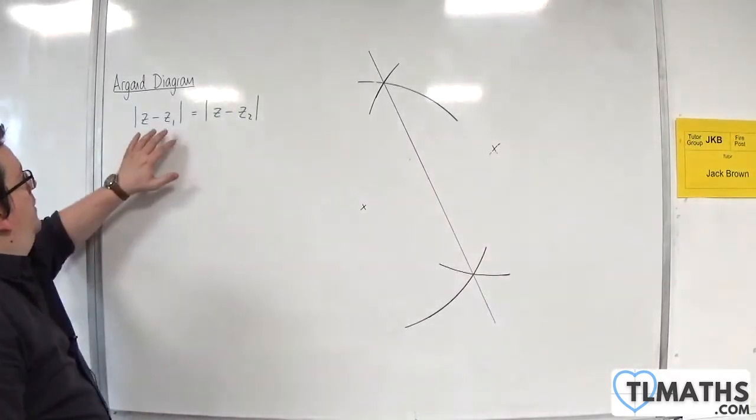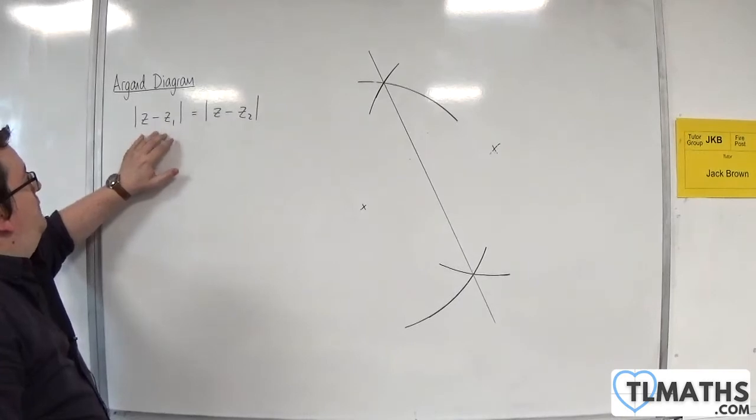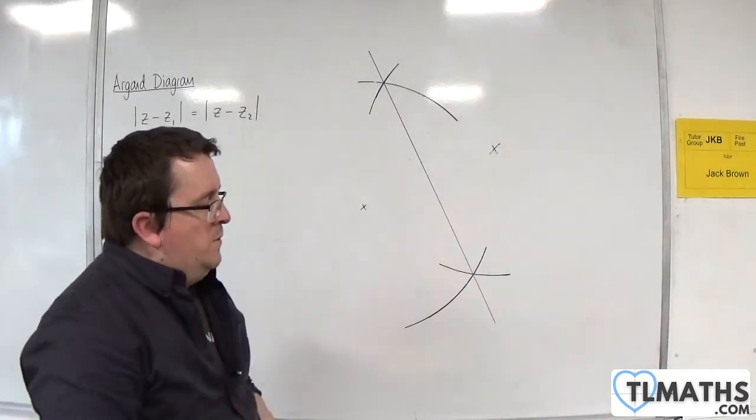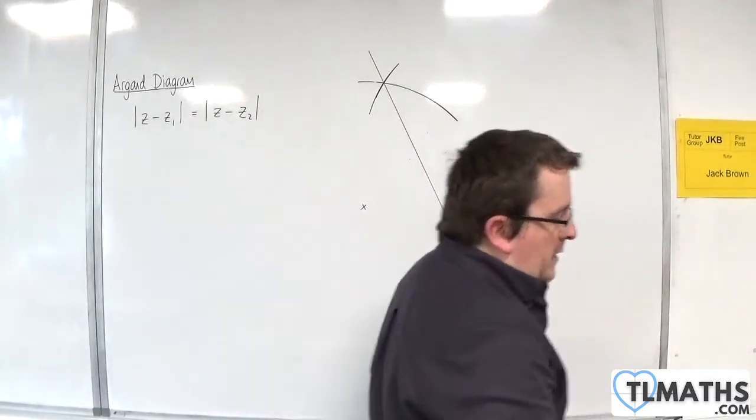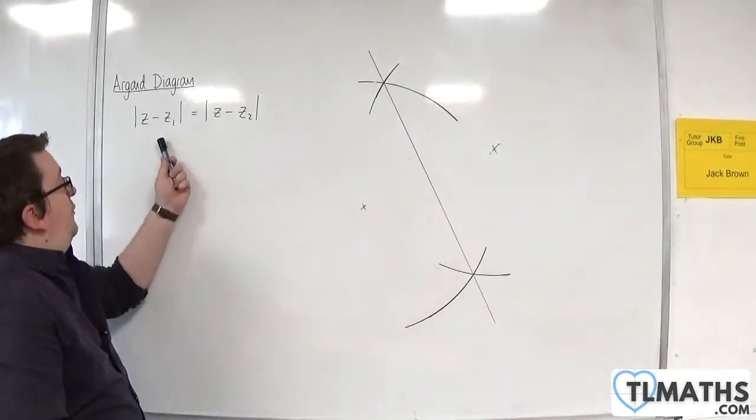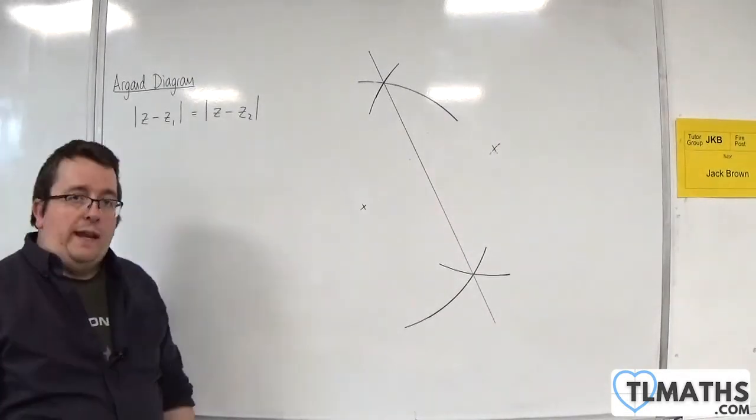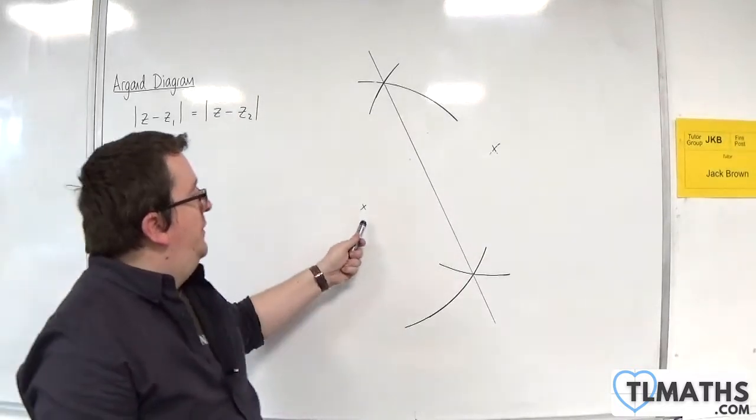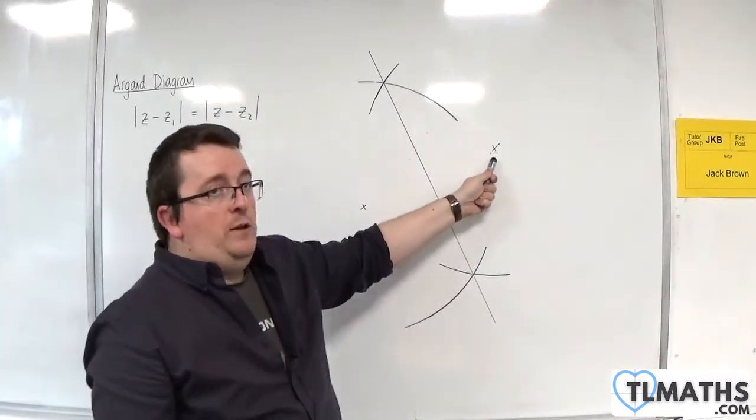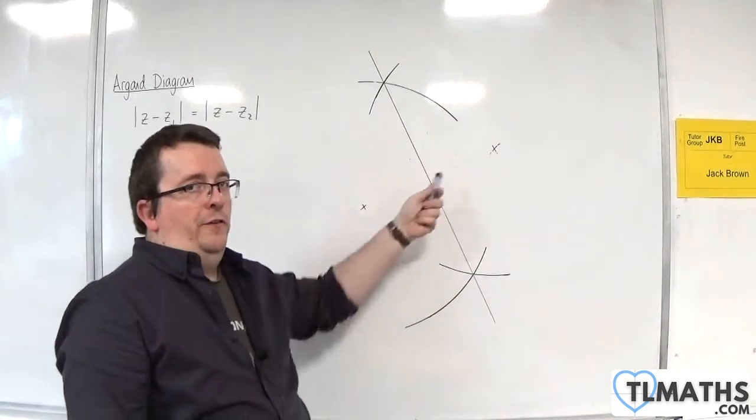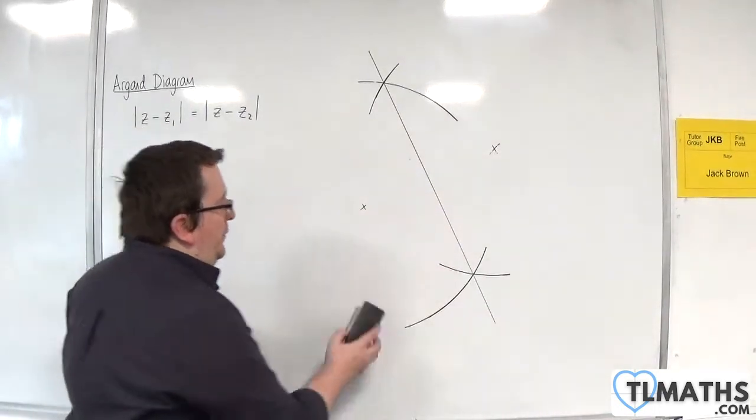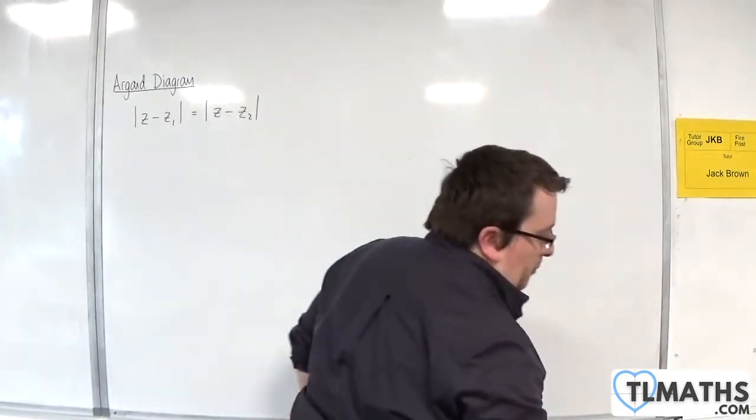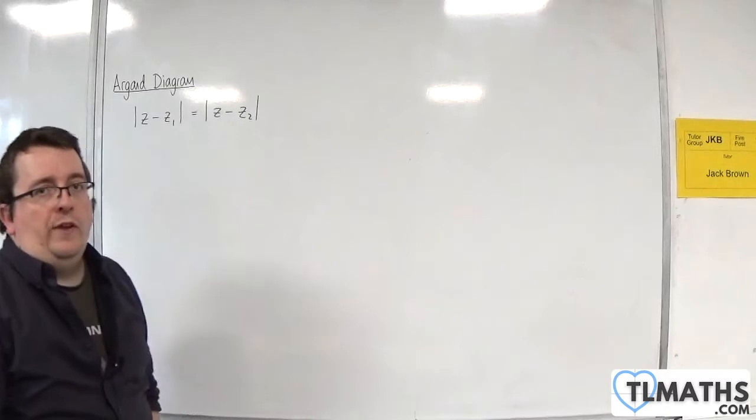Of course, this will vary. These lengths will vary. You just need to make sure it's big enough in order for them to intersect. So what this represents is a perpendicular bisector between the two points. This would be your z1, this would be your z2, or vice versa.